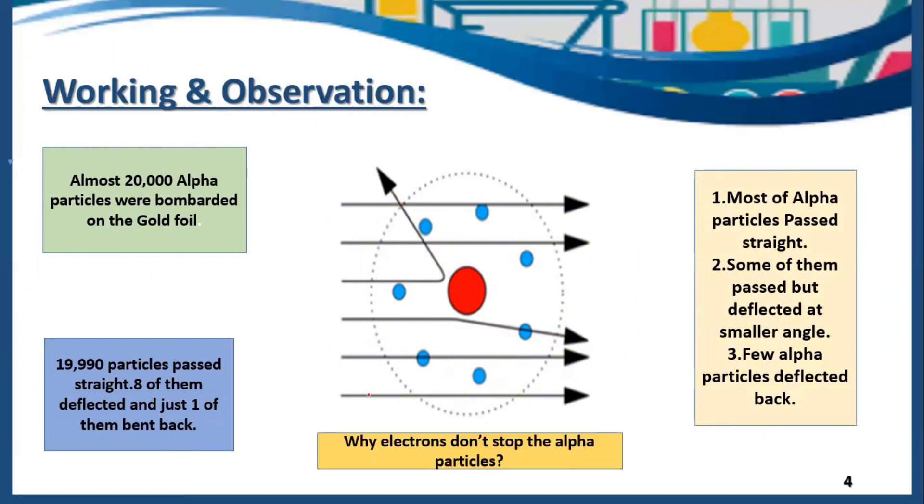Now we have a question: why don't electrons stop the alpha particles? Because alpha particles are doubly positive charged and electrons have a negative charge. They both are different charges, so there must be attraction. So why didn't these negative charges attract these positive charges? The reason is very simple.